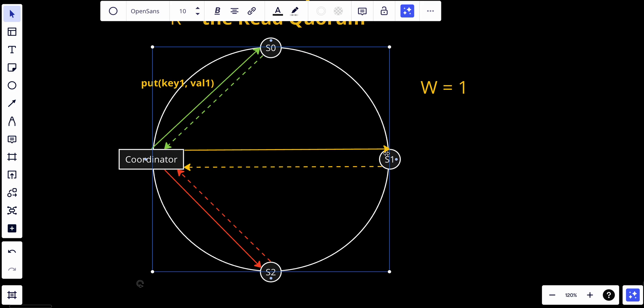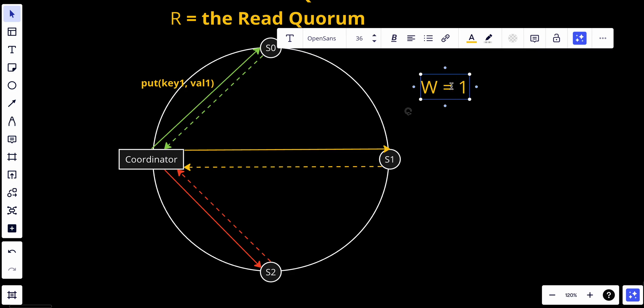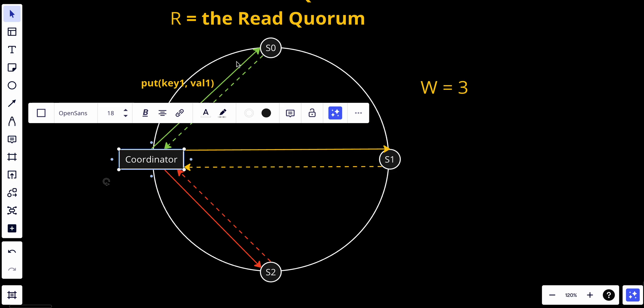Coordinator acts as a proxy between client and nodes. This is the job for coordinator. It shows as the proxy between nodes and the client or the actual server. The configuration of W and R and N is typically a trade-off between latency and consistency. If W equals one and R equals one, an operation is returned quickly because a coordinator only needs to wait for one response from any of the replicas. If W or R is bigger than one, the system offers better consistency, however the query will be slower because the coordinator must wait for the response from the slower replica.